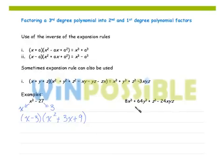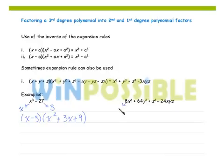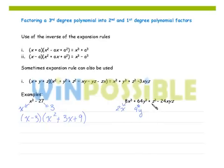This second example follows the third rule. First, I want to confirm that my first three terms are perfect cubes, and they are. When I take the cube root of 8x cubed, I get 2x. The cube root of 64y cubed is 4y, and the cube root of z cubed is just z.